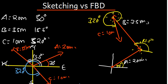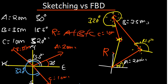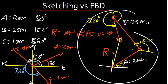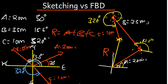Now we need to find the resultant. The resultant is the connection from the first point — the origin — all the way to the end of the last vector. That connection is the resultant vector R. The resultant vector is the addition of vector A plus vector B plus vector C. When the question asks for a free body diagram, you draw all vectors from the origin. When it asks to sketch, you use the tip-to-tail method. That is the difference between sketching and the free body diagram.